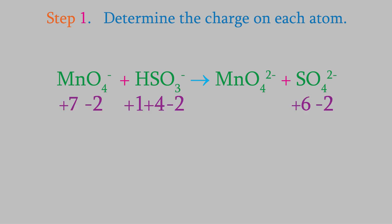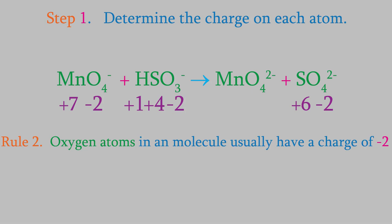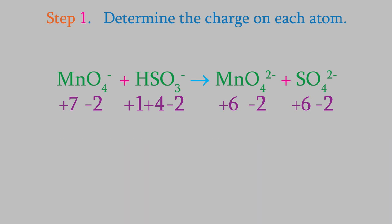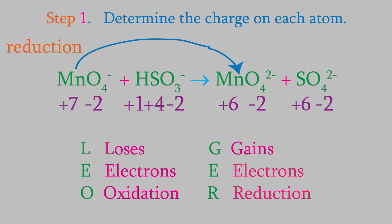Now we just need to find the charges on the atoms in this new ion. We know that rule 2 tells us that oxygens have a charge of minus 2, and rule 5 tells us that the charges on this polyatomic ion must add up to negative 2. That means the manganese must have a charge of plus 6. If you check the charges that change between the left and right sides of this reaction, you'll see that the manganese went from a charge of plus 7 to plus 6, so it must have gained an electron. That means the manganese was reduced. Meanwhile, the charge on the sulfur goes from plus 4 to plus 6, meaning sulfur lost 2 electrons, which is oxidation.